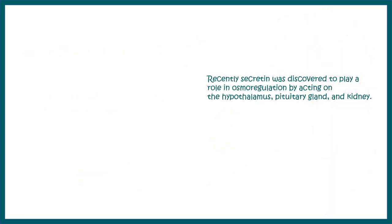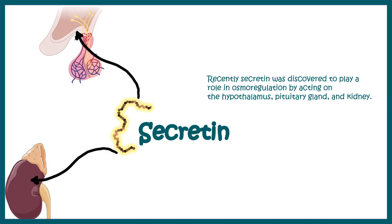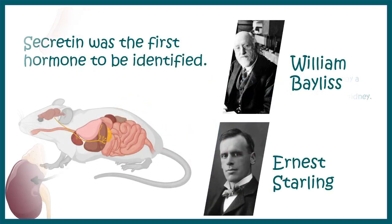Recently, secretin was also discovered to play a role in osmoregulation. Other than working on the duodenum, it can also work on the pituitary gland and the kidneys, where secretin receptors have been found. This represents the role of secretin beyond the GI tract.